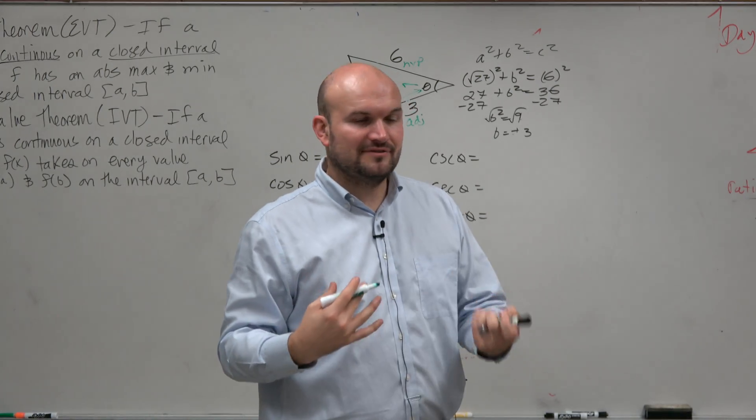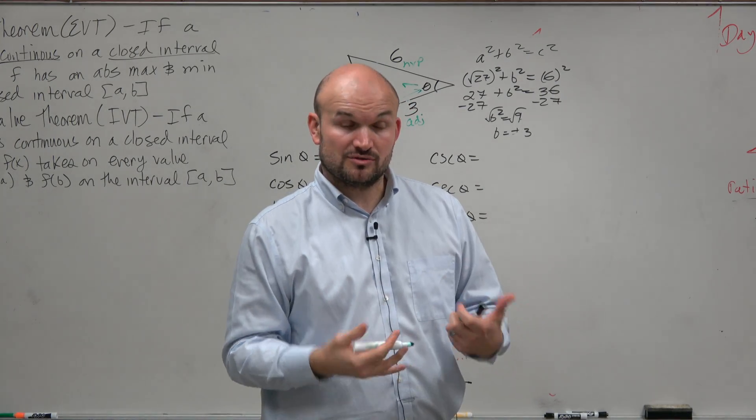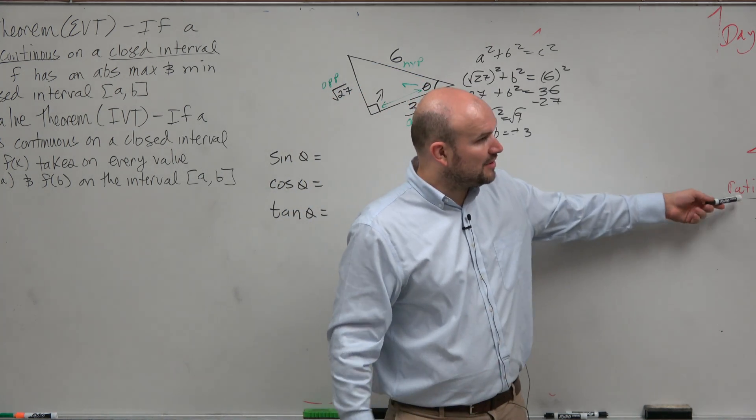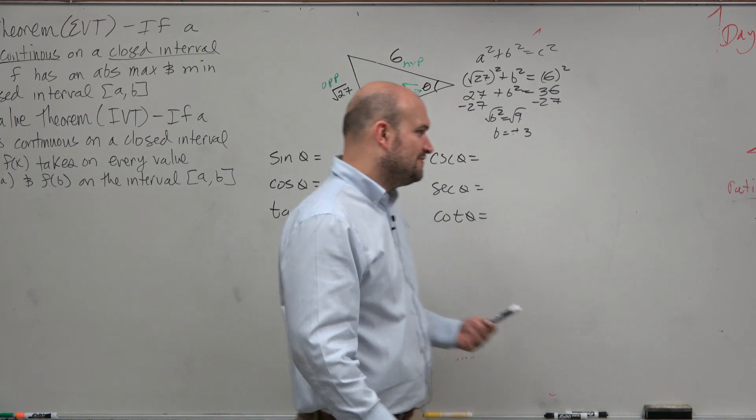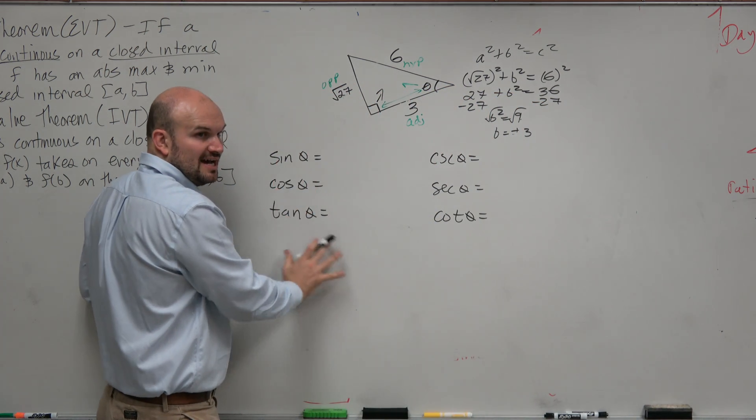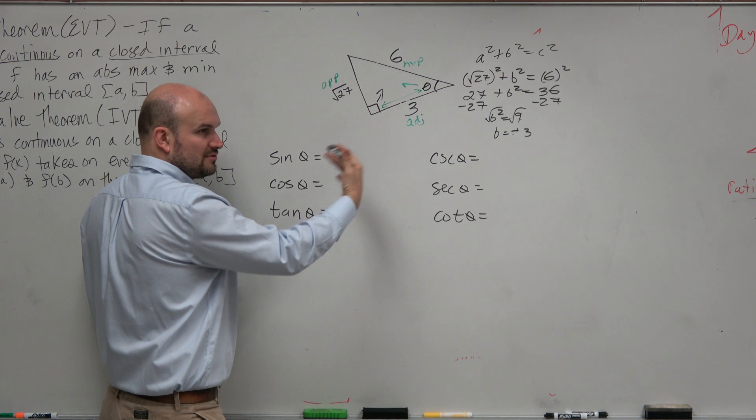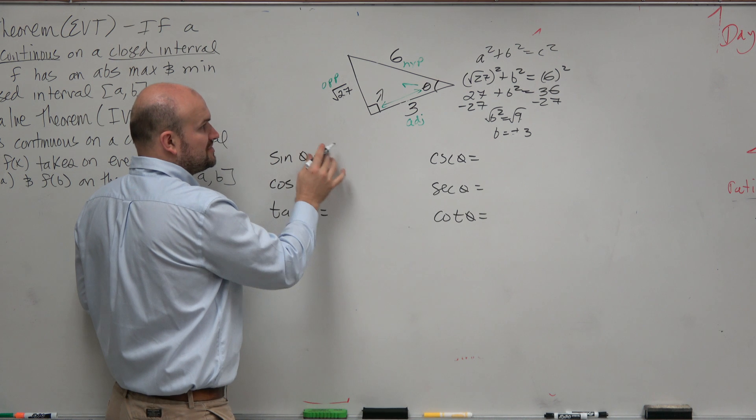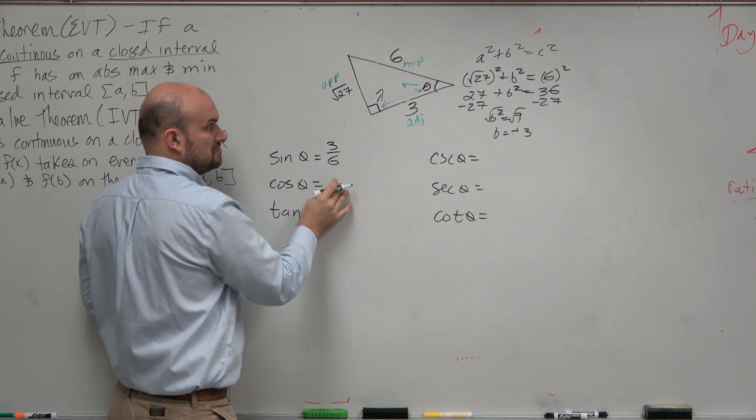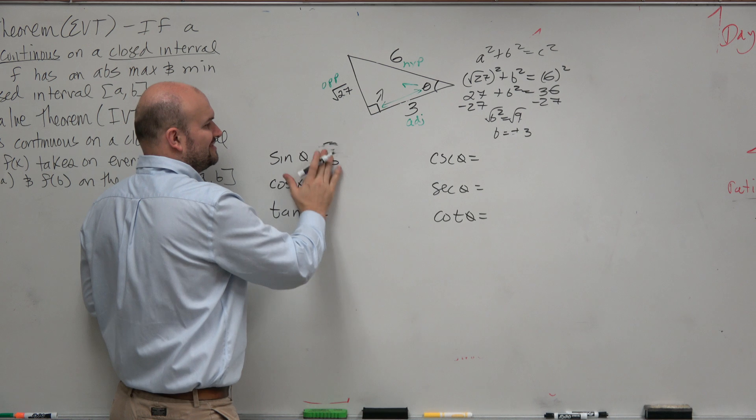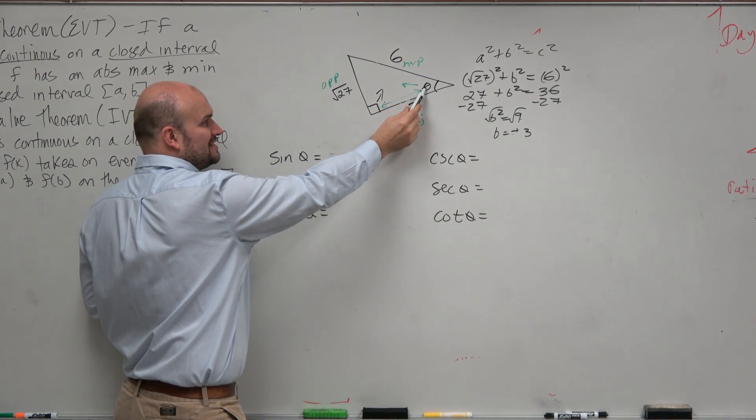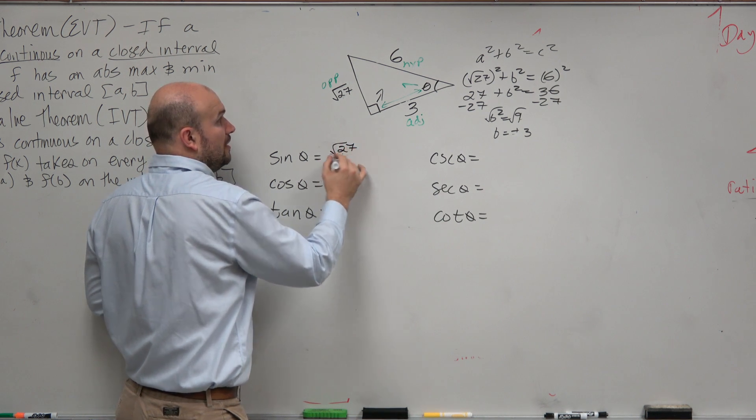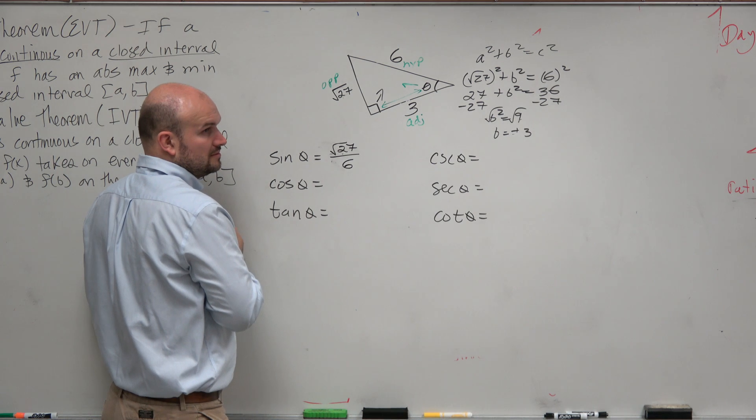And now, once I have those, all I have to do is remember my trigonometric ratios, which you will need to make sure you have remembered or memorized. So we have our six trigonometric ratios. They're fairly basic. I always like to do the sine, cosine, tangent first, because the reciprocals are just that, the reciprocals. So the sine is opposite over hypotenuse. Opposite of theta is square root of 27 over the hypotenuse, 6.